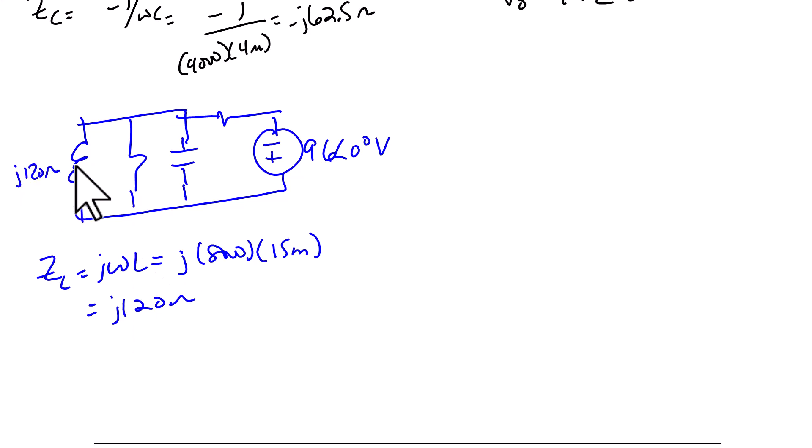Then next, we have a 30 ohm resistor here, and we have a capacitor. The impedance of the capacitor is negative J over omega C, which is negative J over 8000 times 4 microfarads. So the value of the capacitor is negative J 31.25 ohms.